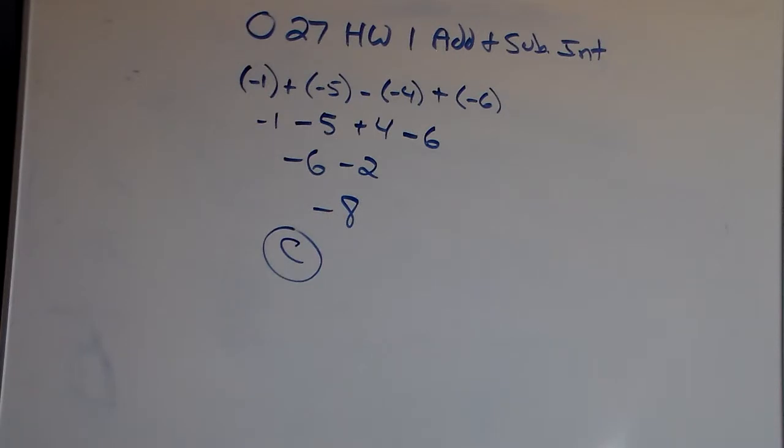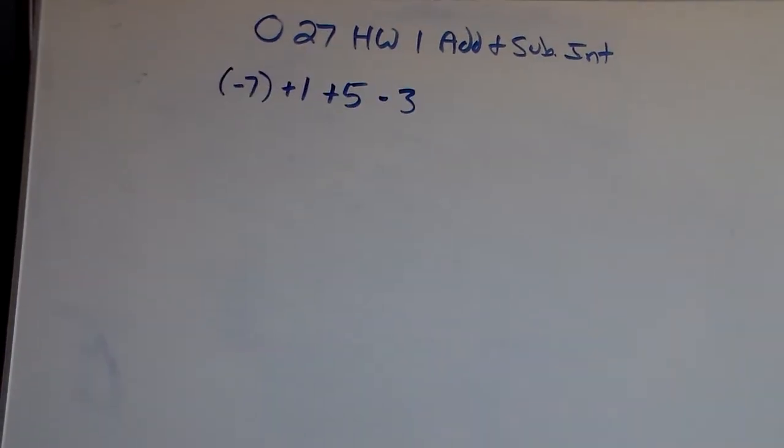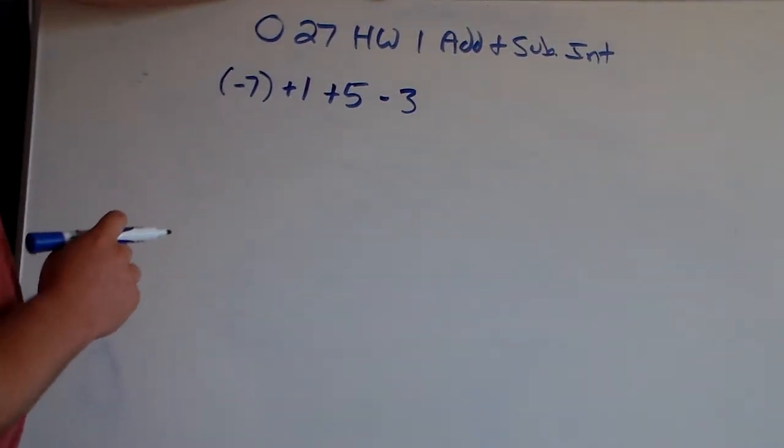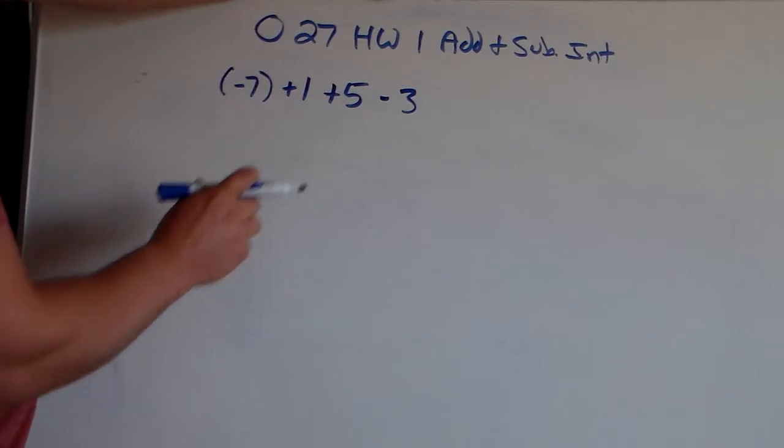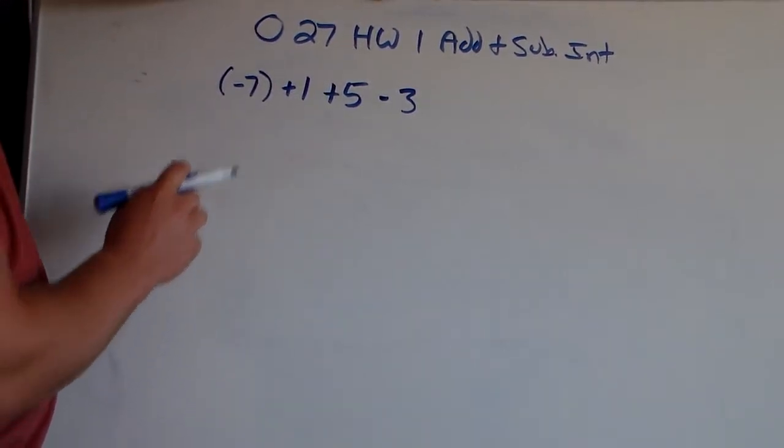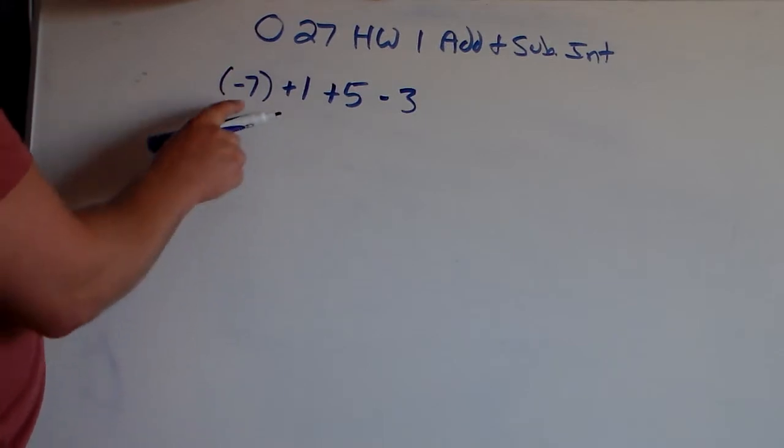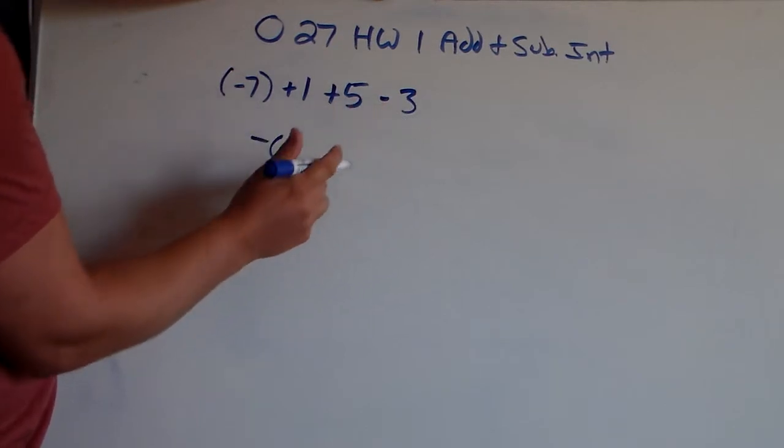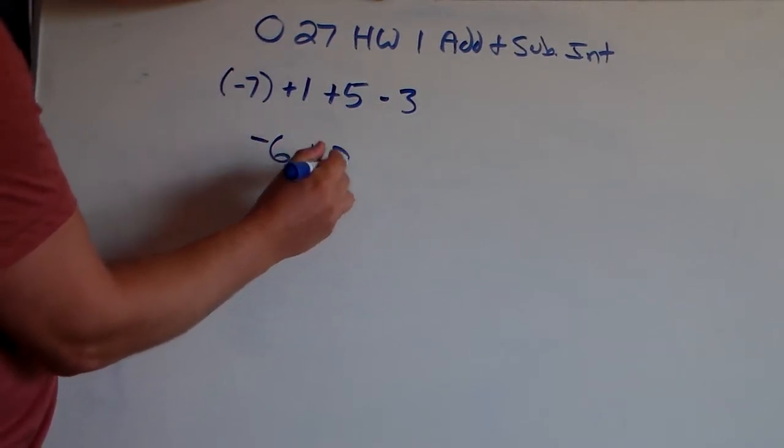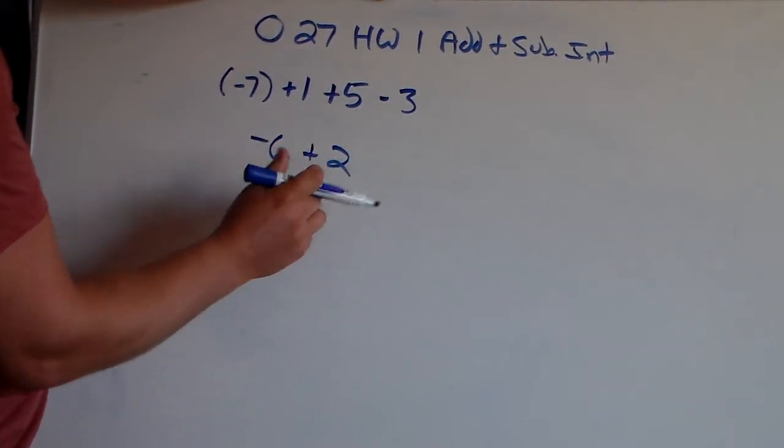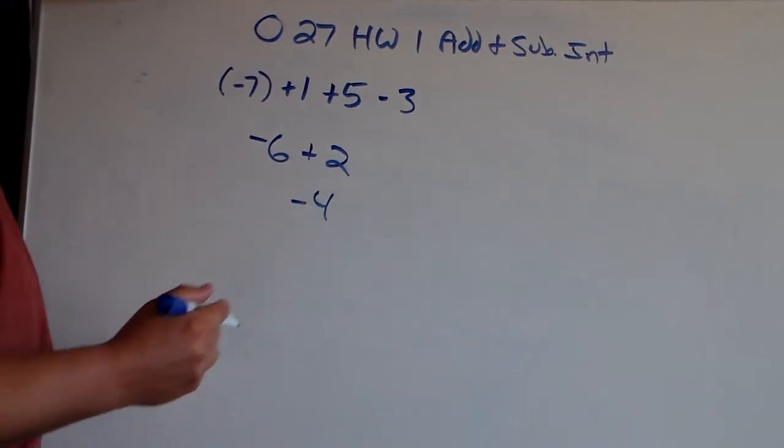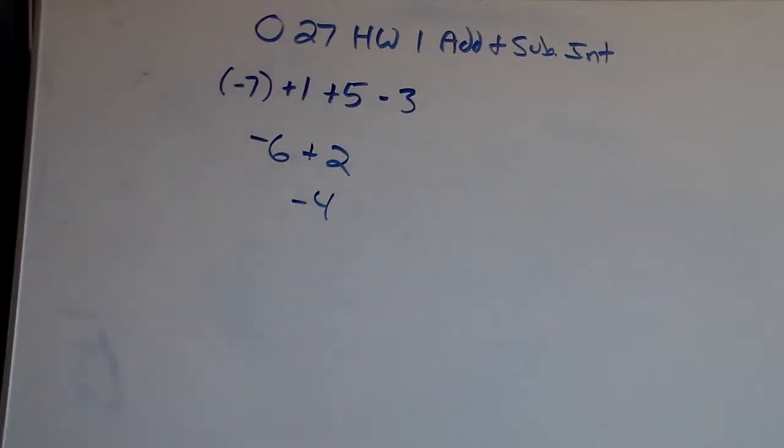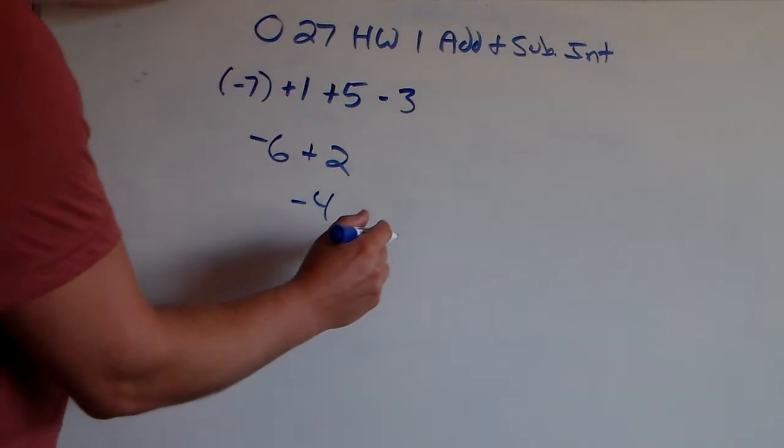Next up is problem number 2, which says negative 7 plus 1 plus 5 minus 3. We've got to evaluate, we've got to simplify. Make these 4 integers into just one integer. So negative 7 plus 1 we know is negative 6. Positive 5 minus 3 gets you positive 2. Negative 6 plus 2 gets us negative 4. And that's C in the multiple choice.